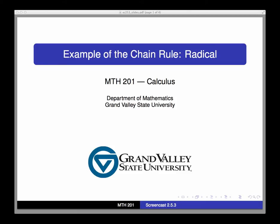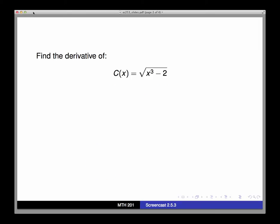Hi, and welcome to another example of using the chain rule. In this video, I'd like to go back and find the derivative of this function, C(x) equals the square root of x cubed minus 2. I mentioned that function in the review video for this section. So let's find C prime of x.